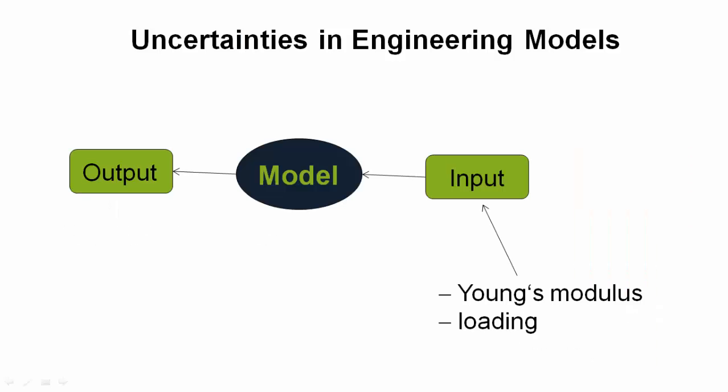In engineering, we approximate the system of interest by a model. Any model is a simplified representation of reality. The behavior of a model depends on its input parameters. For a finite element model of a structure, this can be the material parameters, like the Young's modulus or the applied loading. The state of the input parameters is usually not known with certainty.